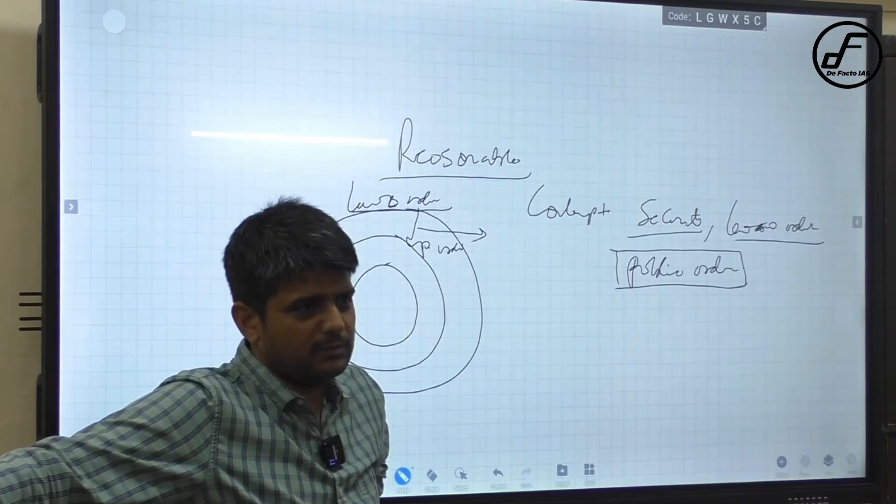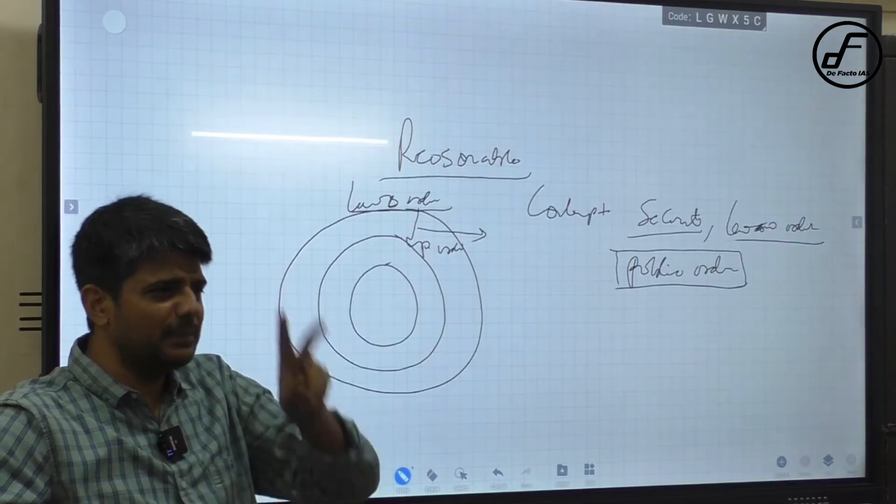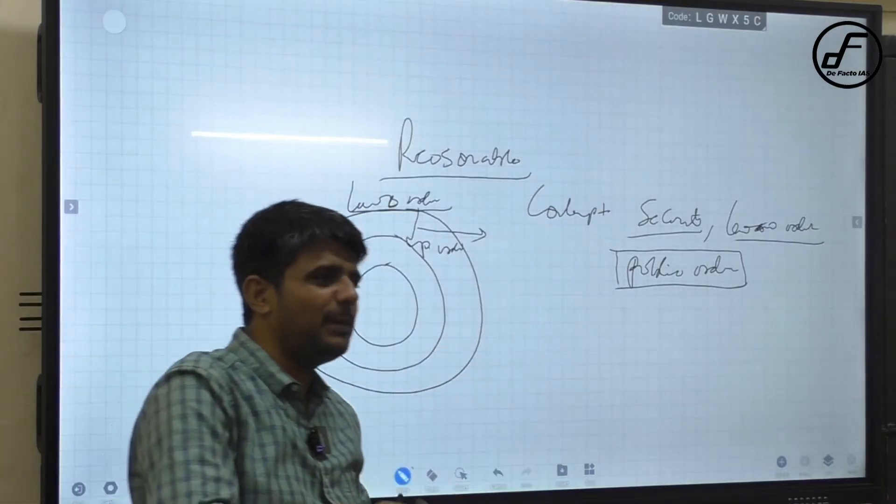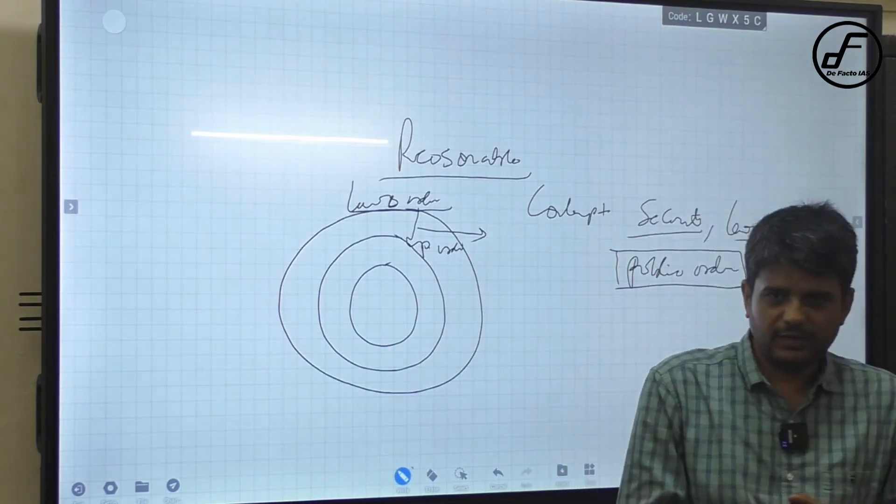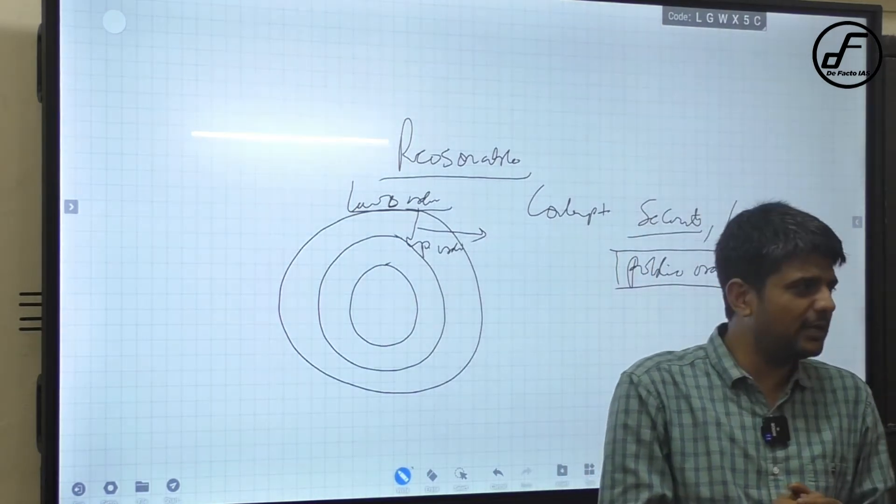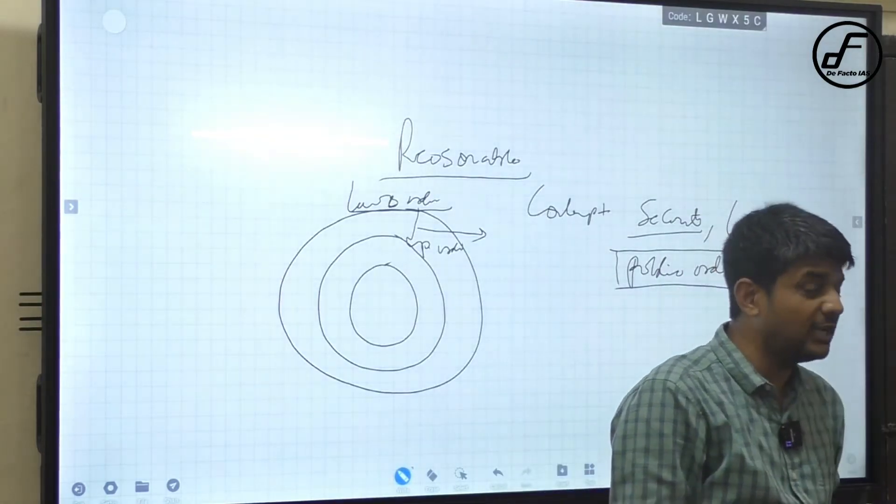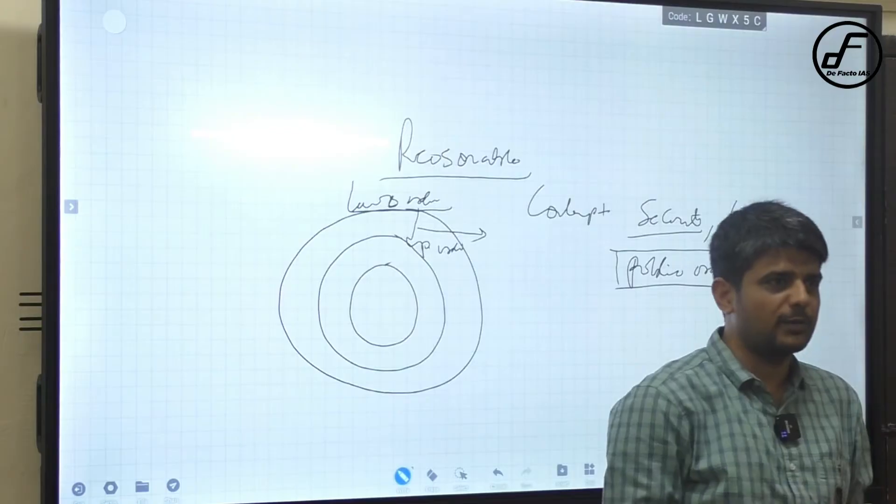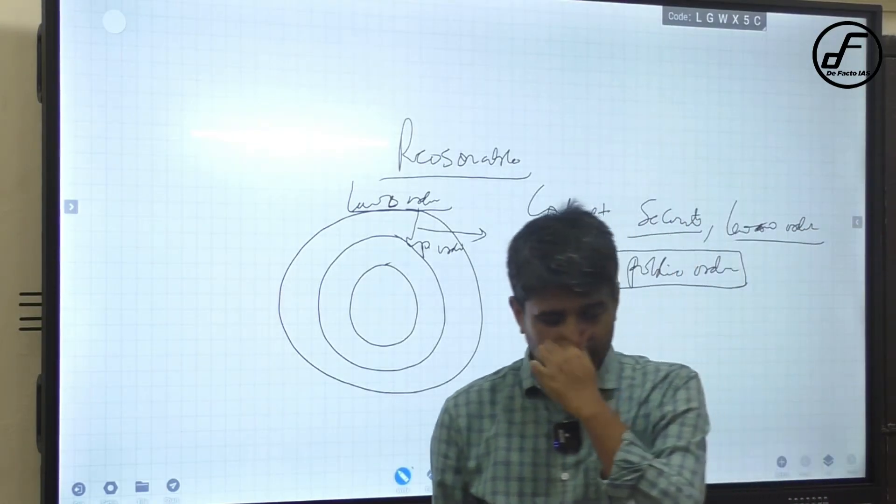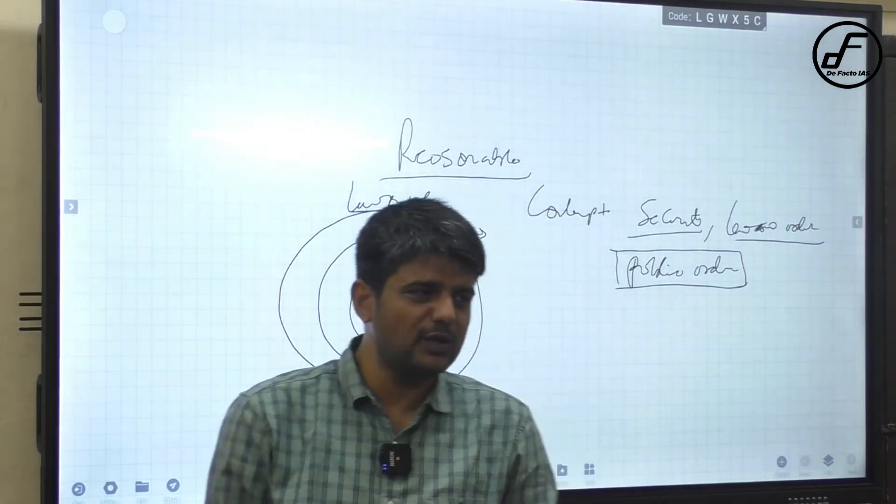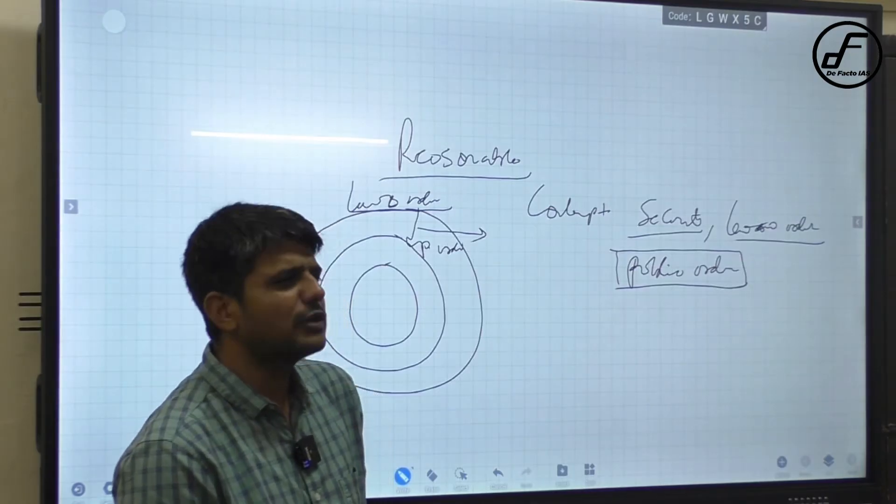The difference between law and order and public order is simply that if the general public starts to get inconvenienced, if inconvenience is caused on general public, it means the rights of the general public are started to be restricted because of that situation, then only it becomes a public order problem. Otherwise it is a simple law and order problem. That was very correct also in that movie - normally 90 percent of the public don't care, it is not a public order problem, it is merely a law and order problem.